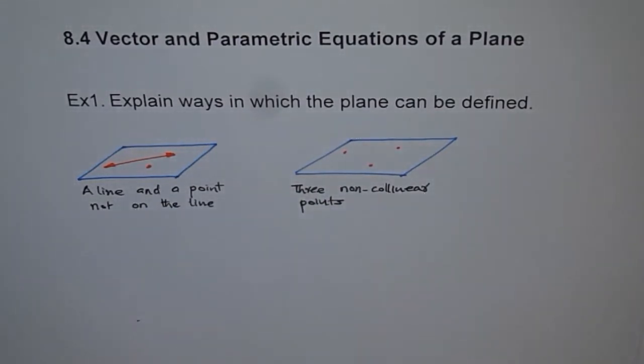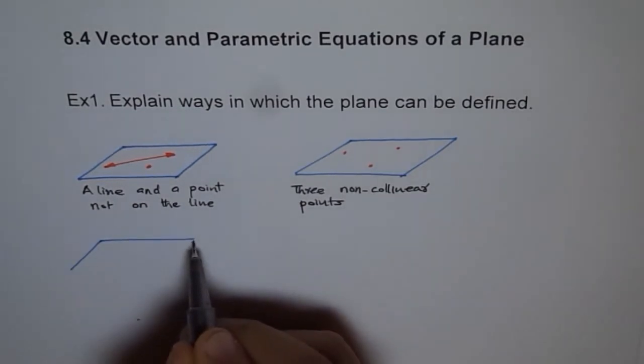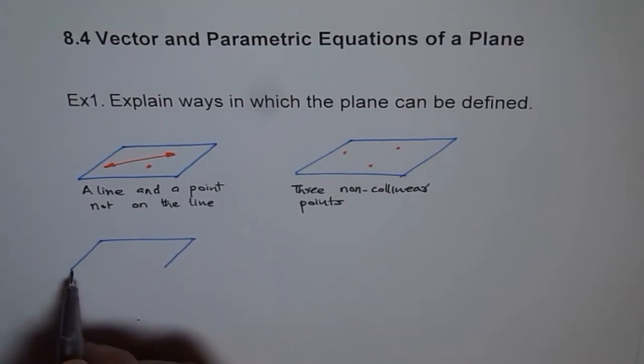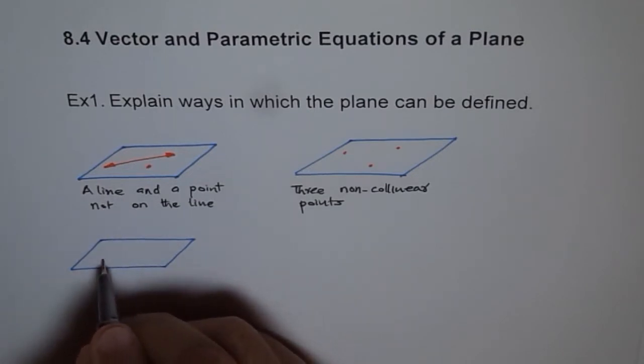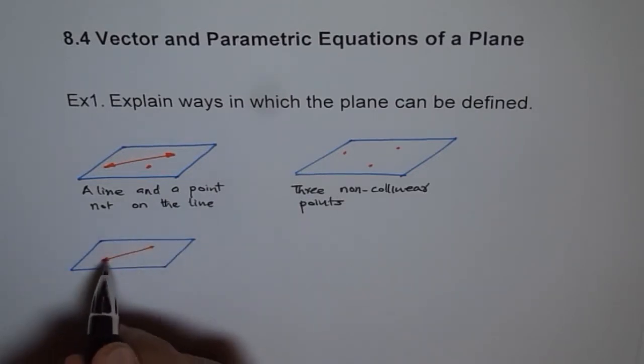There are two more conditions. So one is that we have two different lines which are intersecting. So let's say we have a line like this, and we have another line going in a different direction.